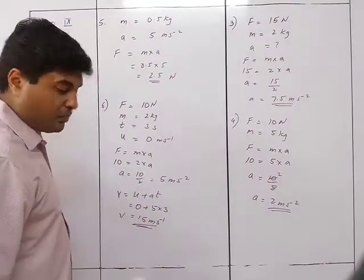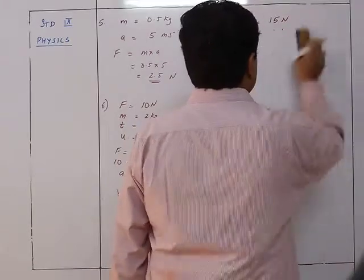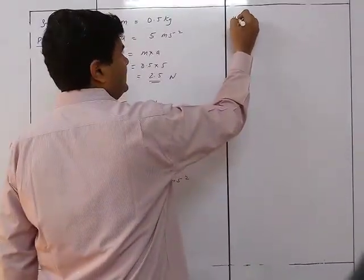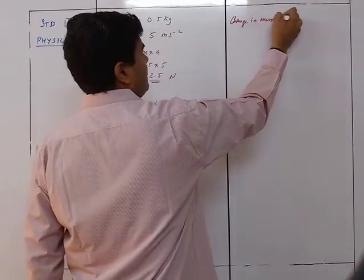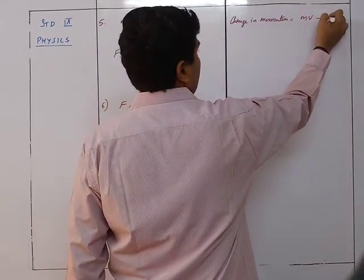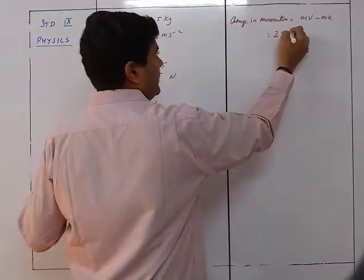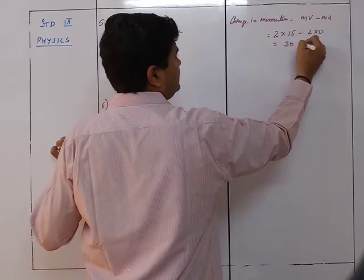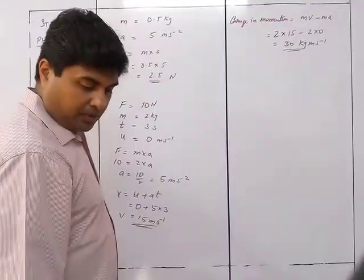Now find the change in momentum: delta p equals mv minus mu equals 2 times 15 minus 2 times 0 equals 30 kg meter per second. That is the change in momentum.